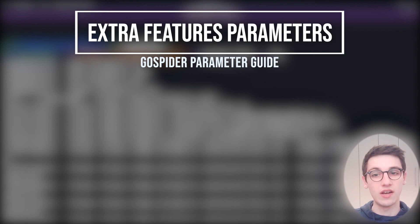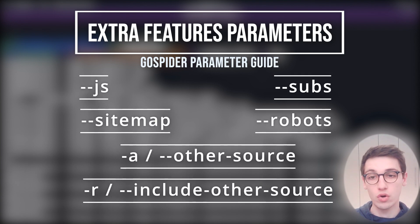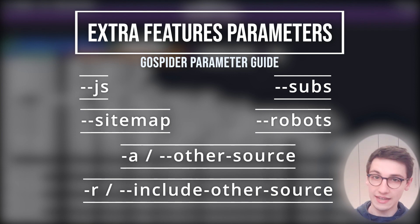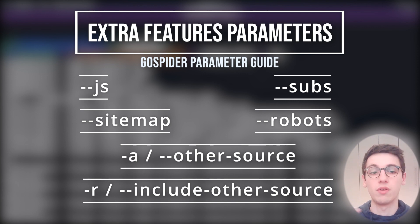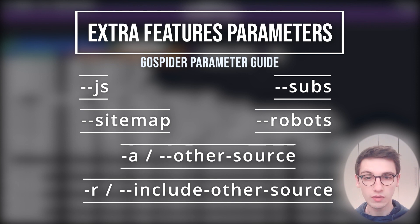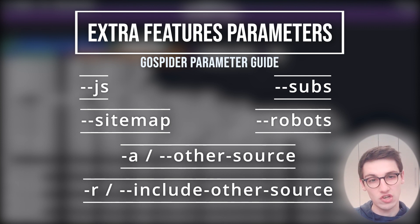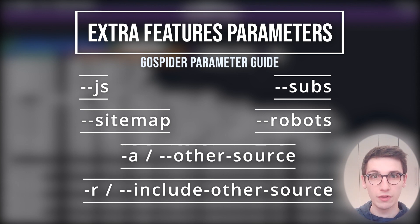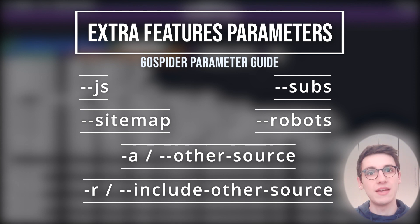The tool can not only find files but also parse JavaScript files with "--js", include subdomains with "--subs", and crawl sitemaps if it finds a sitemap.xml with "--sitemap", and the robots.txt file with "--robots". You can also use "-h" or "--other-source", which uses third-party archives such as Common Crawl, Wayback Machine, and VirusTotal — big databases of files from the past — to also find URLs.